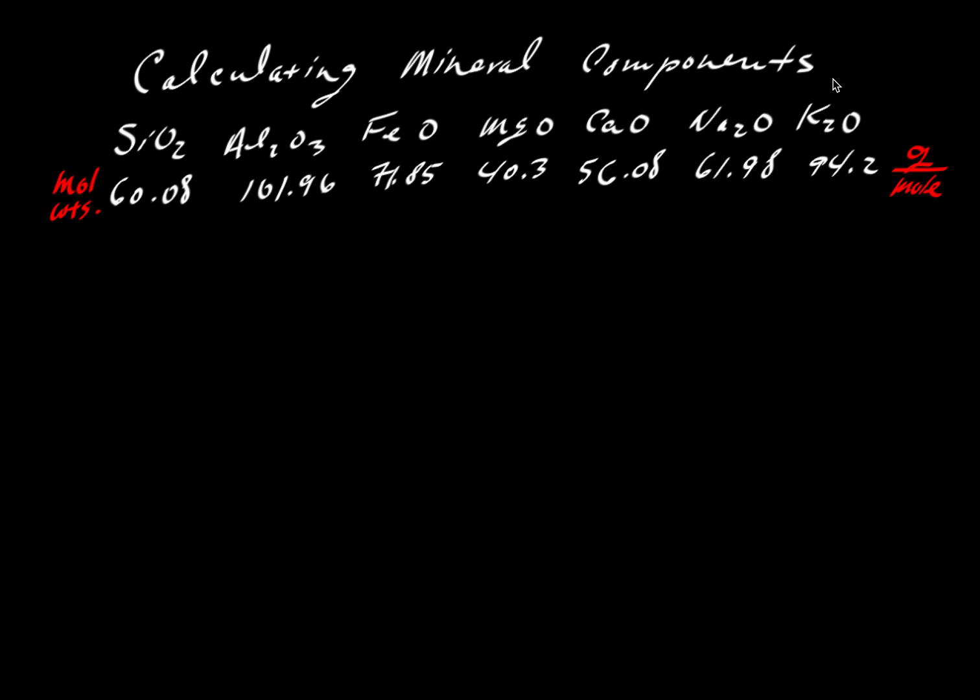This is our second example of calculating mineral components when we're given a set of oxides that have been measured. In this case, we're going to look at a feldspar.